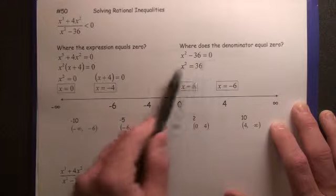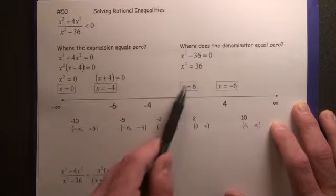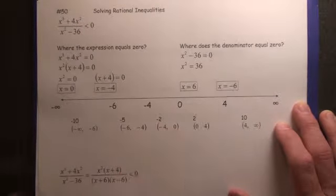Then, where does the denominator equal 0? That's going to give us the asymptotes, so therefore we have x = 6, x = -6.